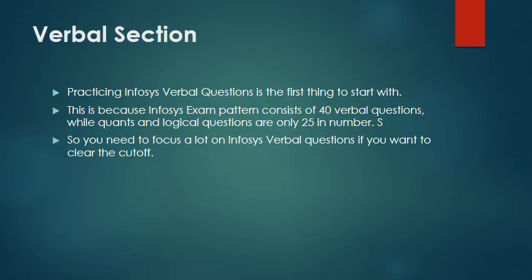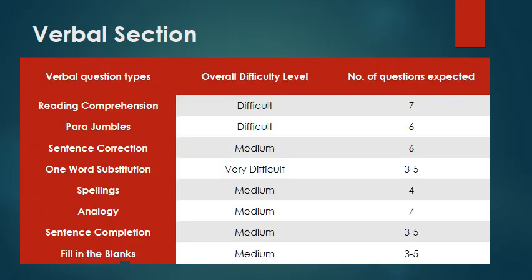The third section is the most important in Infosys because you have 40 questions to solve in a short duration, whereas the other sections have fewer questions. The verbal section covers reading comprehension, para jumbles, sentence correction, one word substitution — which is of very difficult level — spellings, analogy, sentence completion, and fill in the blanks.